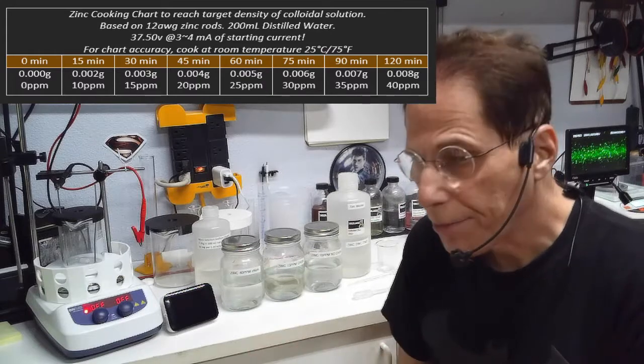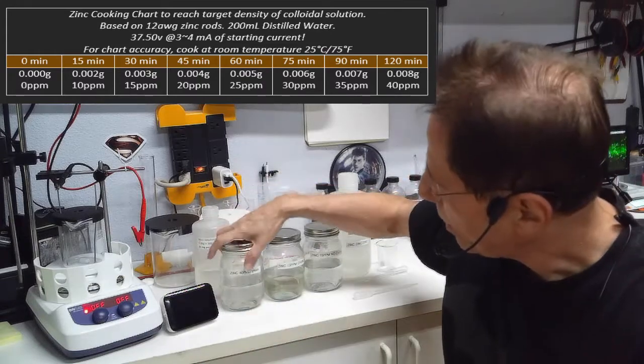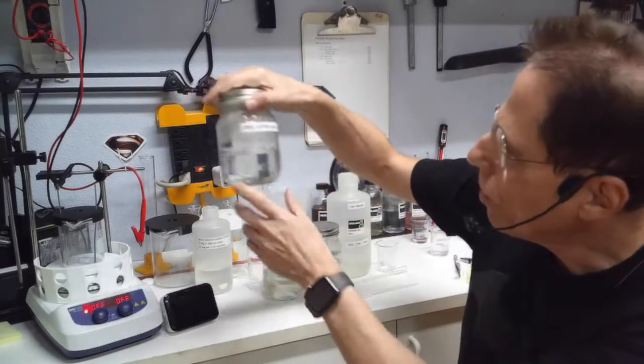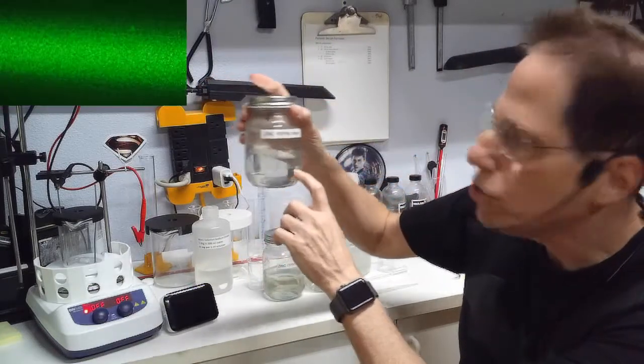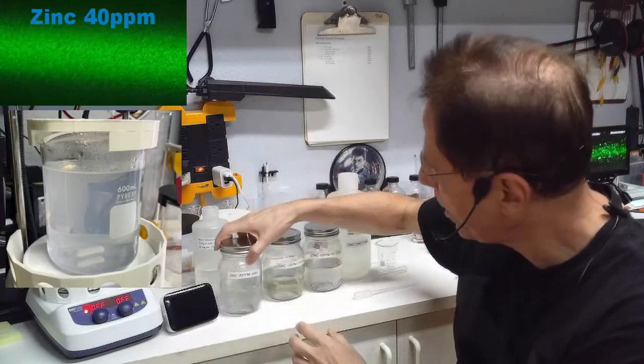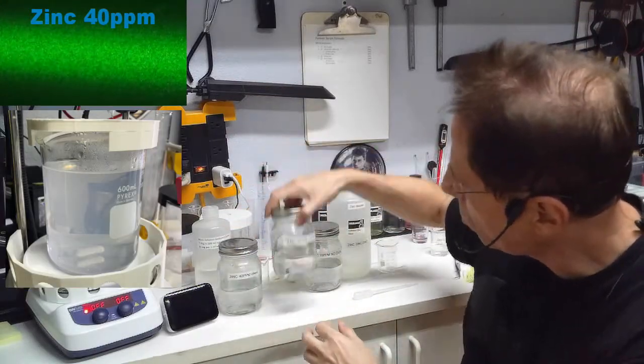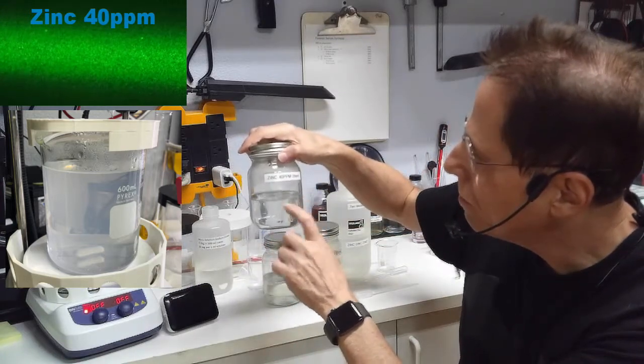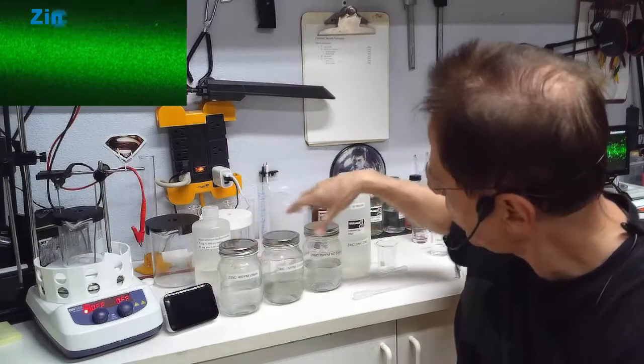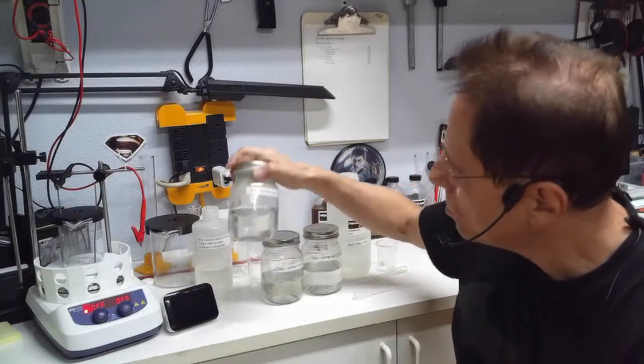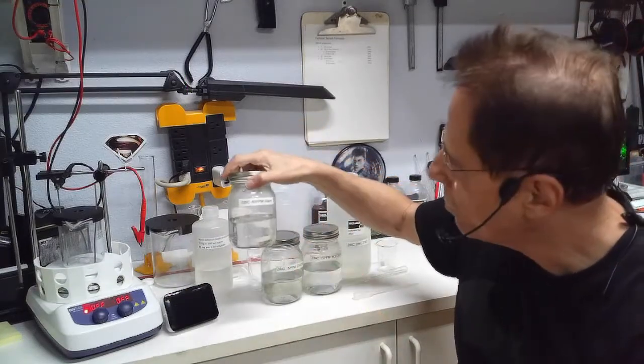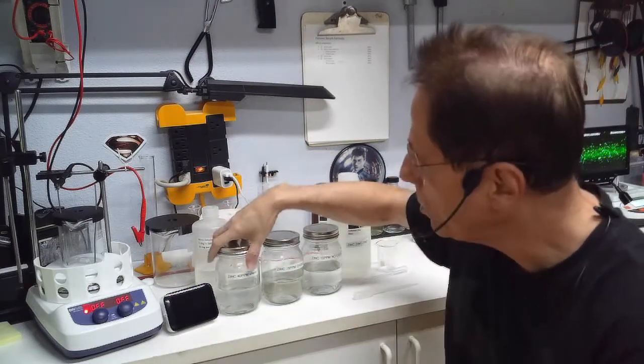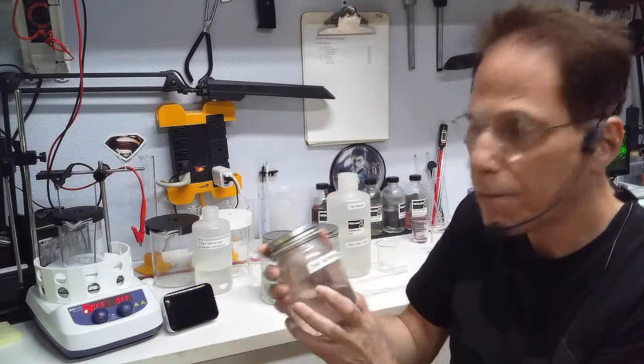So try and keep it around three milliamps, cook it for that length of time that's on the chart to get what you want. Now this is a 40 parts per million solution. The 40 parts per million solution starts to look a little milky white. This one has a very slight milky white thing to it. If you're cooking your stuff and all of a sudden it starts getting milky white, you're reaching around 40 parts per million. You don't really want to go any higher than that. I would use 40 parts per million for topical stuff.